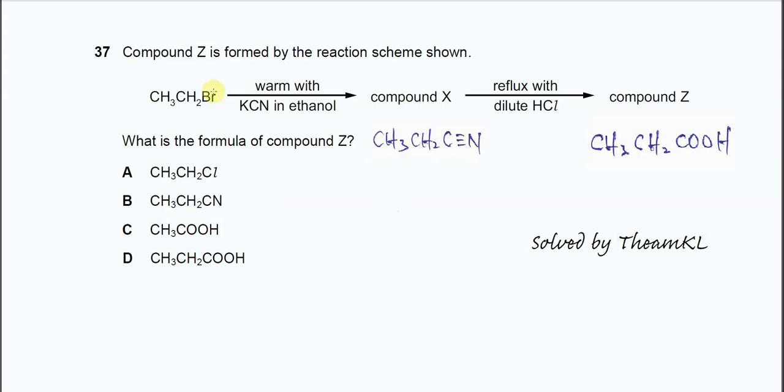Question 37. Compound Z is formed by the reaction scheme shown. It started with this bromoethane, warm with KCN in ethanol. These reagents and conditions tell us it's a substitution reaction.